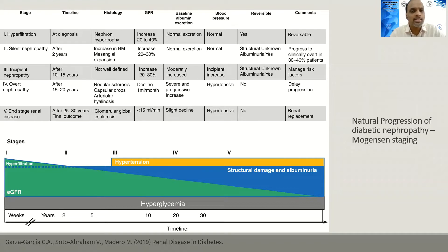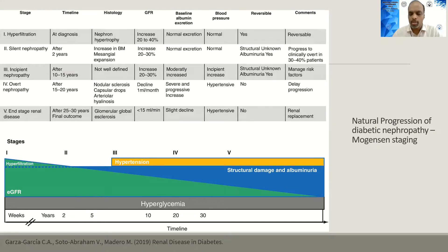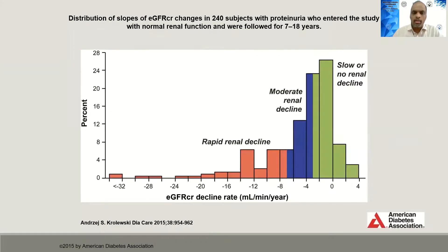This staging has been classically described in type 1 diabetics. In type 2 diabetics it may be difficult to extrapolate and determine which stage the patient is at presentation, because we may not know the onset of type 2 diabetes. In a type 1 diabetic, based on the onset of disease, we may be able to predict which stage the patient is in.